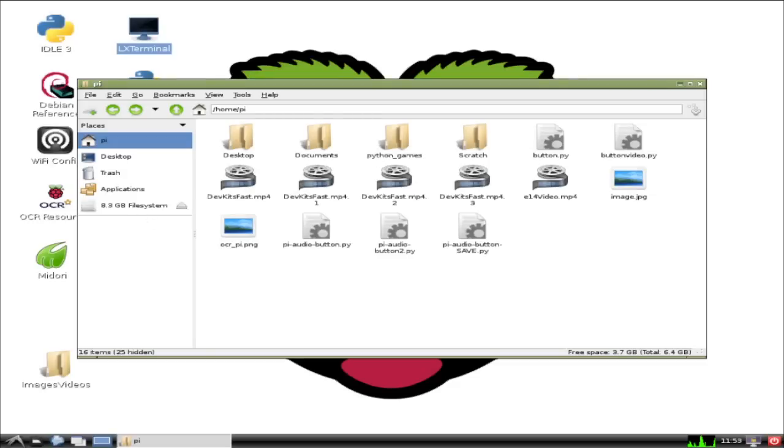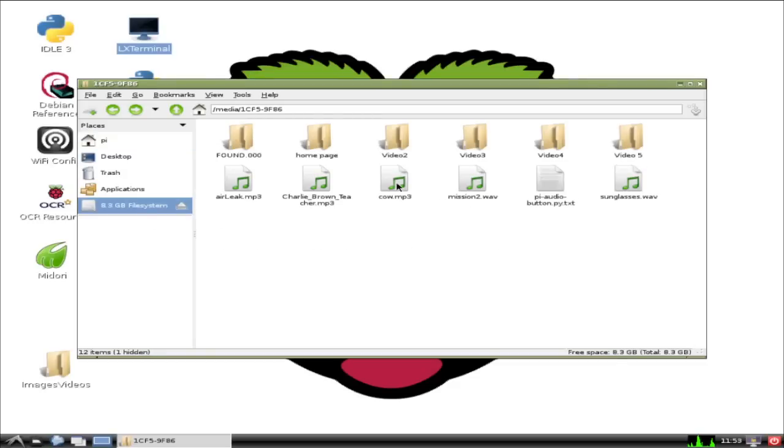And finally, since we're making a sound file play, we'll need the sound file itself. It's called cow.mp3. It's also available for download below. So just make sure you save the mp3 file in the same directory where you created your Python script.